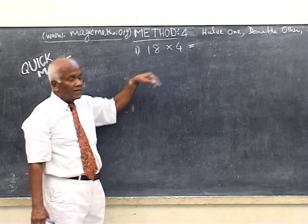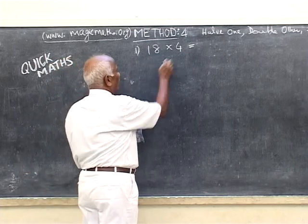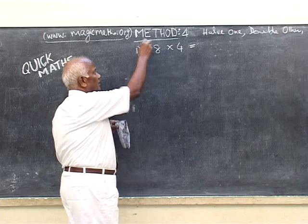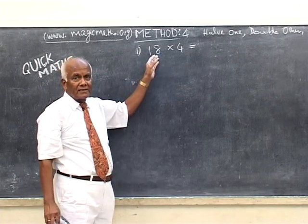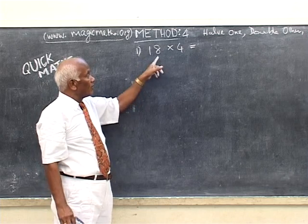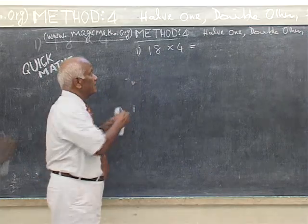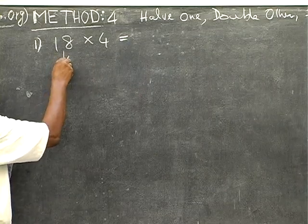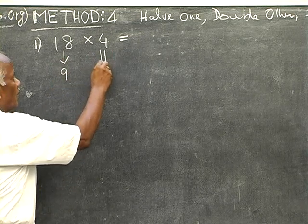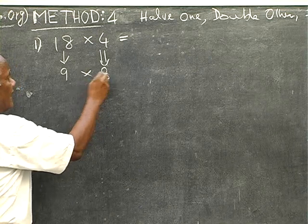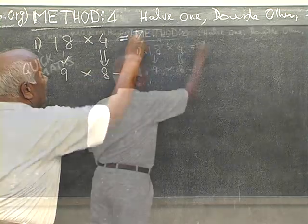So look at this different method. This 18 into 4, normally children who know tables also may not know 18 tables these days. So one child in one of this workshop suggested, half the 18, 9, double the 4, 8, 9 into 8, 72.